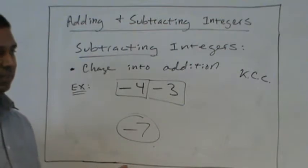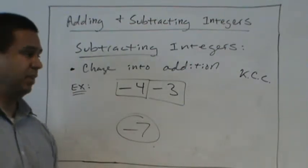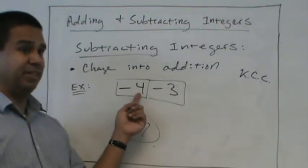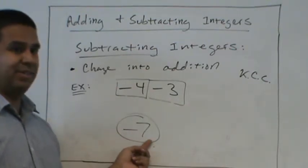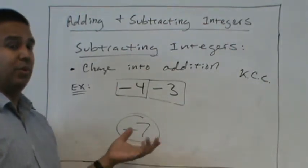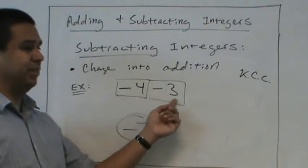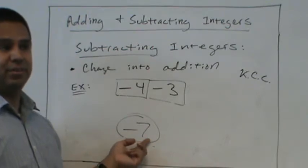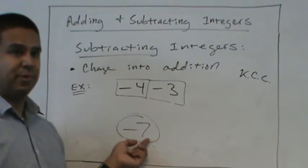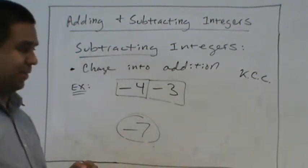Or, you can think of money, right? If you owe $4 and you owe $3, well, now you owe $7. Or, you can spend $4, you spend another $3, that means you spend $7. There are lots of ways you can think of it. You're going to practice and practice until everyone can do it. Okay.